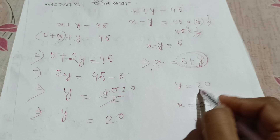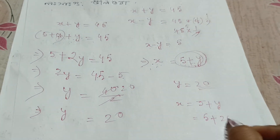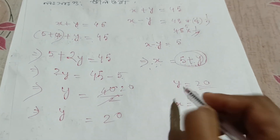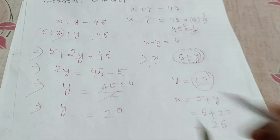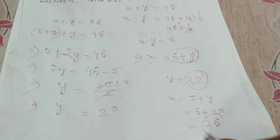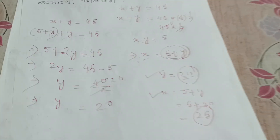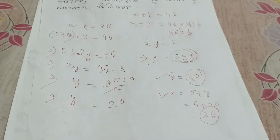y means 20, x means 25. xy — that gives us the product.